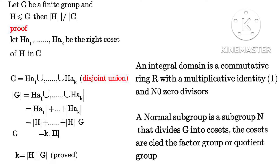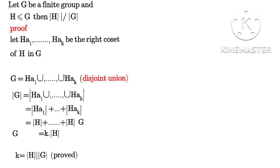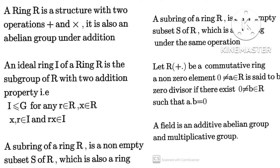We also have some important terminologies in groups and rings: integral domain, normal subgroup, ring, ideal of a ring, zero divisor, and field. We should be able to differentiate between a ring, the ideal of a ring, a field, an integral domain, and the zero divisor of a ring. Those are the important terminologies in both groups and rings.